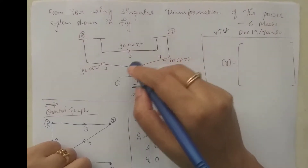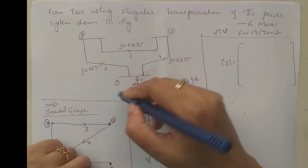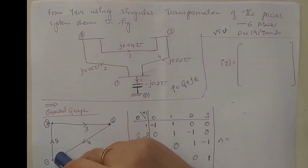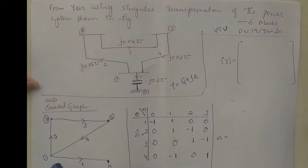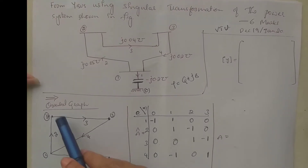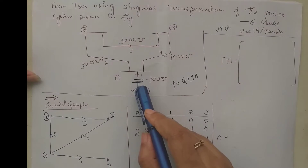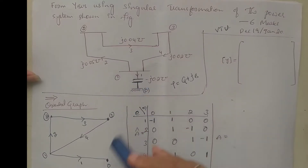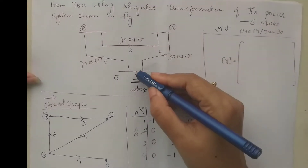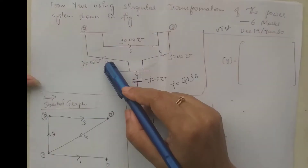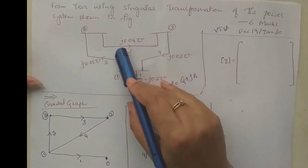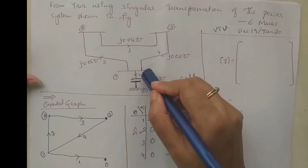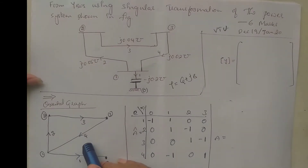When directions are given, it is easy to draw the oriented graph. For the oriented graph, first you have to mention all the nodes. This is the first node, second node, third node. The capacitor is grounded, so ground can be taken as the 0th node. Element numbers are given: element 1 goes towards 0, element 2 from 1 to 2, element 3 from 2 to 3, element 4 from 3 to 1. Draw the oriented graph as it is.